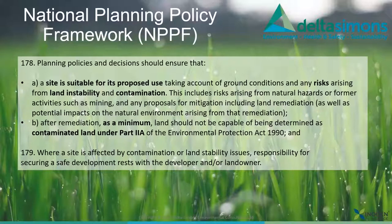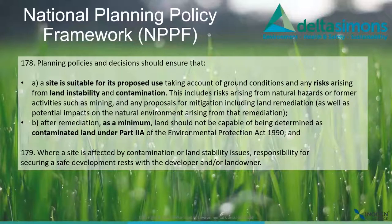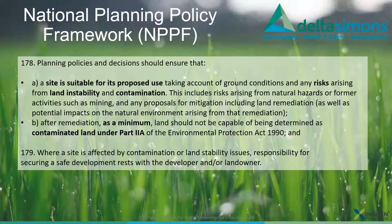Any risks arising from land instability and contamination must be addressed. As a benchmark, land should not be capable of being determined as contaminated land under Part 2A of the Environmental Protection Act. The UK has an official legal definition of contaminated land — essentially capital-letter 'Contaminated Land'. Because the UK gave birth to the industrial revolution, this is pragmatic legislation designed to identify the worst sites — those posing the greatest risk — rather than capturing most previously developed land.